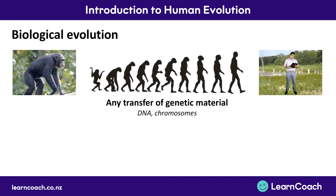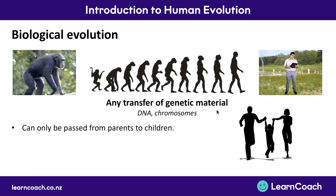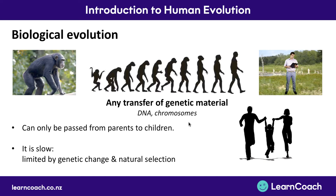Starting with biological evolution — that means any transfer of genetic material, so that's DNA and chromosomes that gets passed on from parents to kids. A change in genetic material leads to a physical change. The key things to know are that it can only be passed from parents to children, it's slow — it takes generations to have genetic change — and it's limited by natural selection.